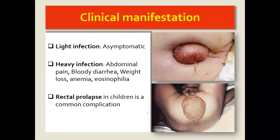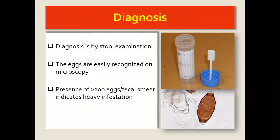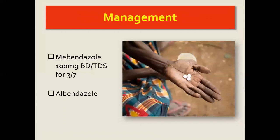You can see examples of how rectal prolapse happens. Diagnosis is basically stool examination — we don't do a tape test on the perianal area; we actually look at the stool. We take a stool sample, smear it on a slide, and visualize it. When we have over 200 eggs per fecal smear on a slide, it is indicative of a heavy infestation.